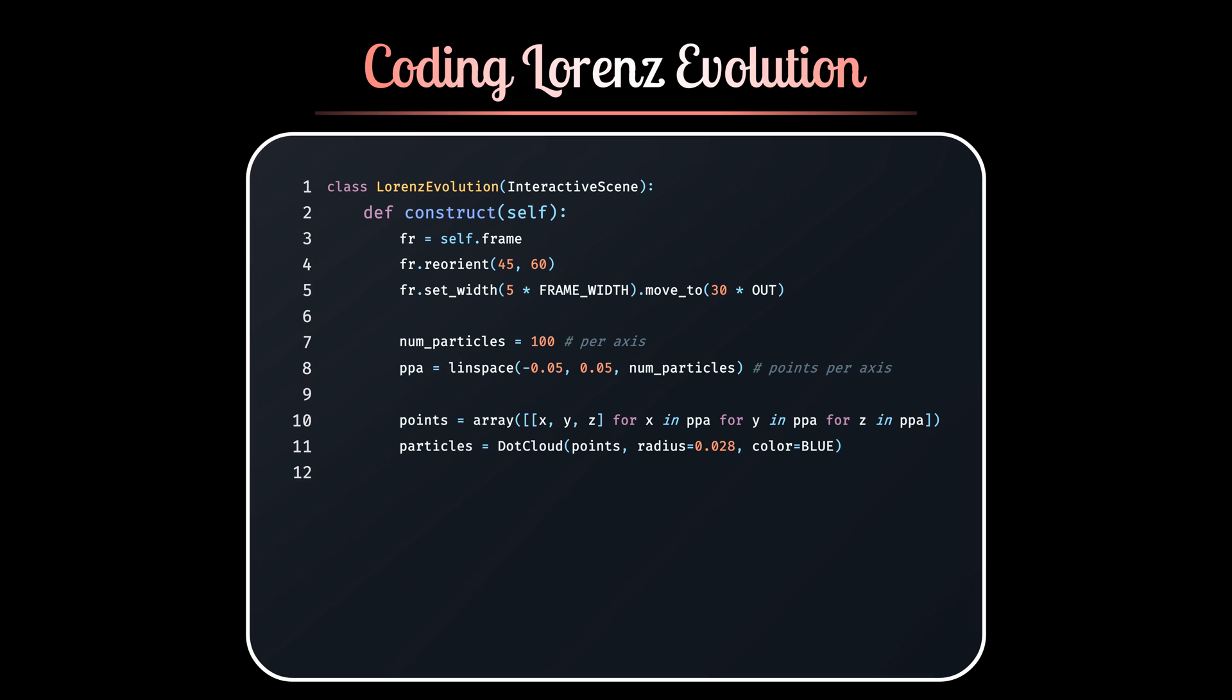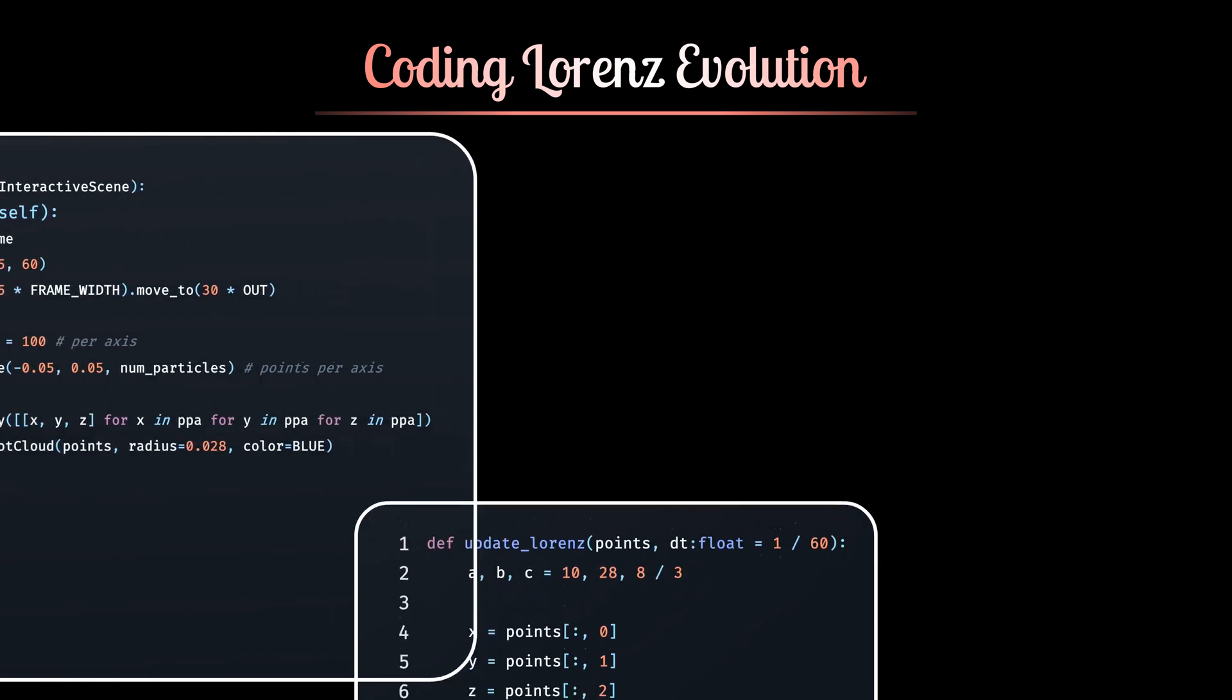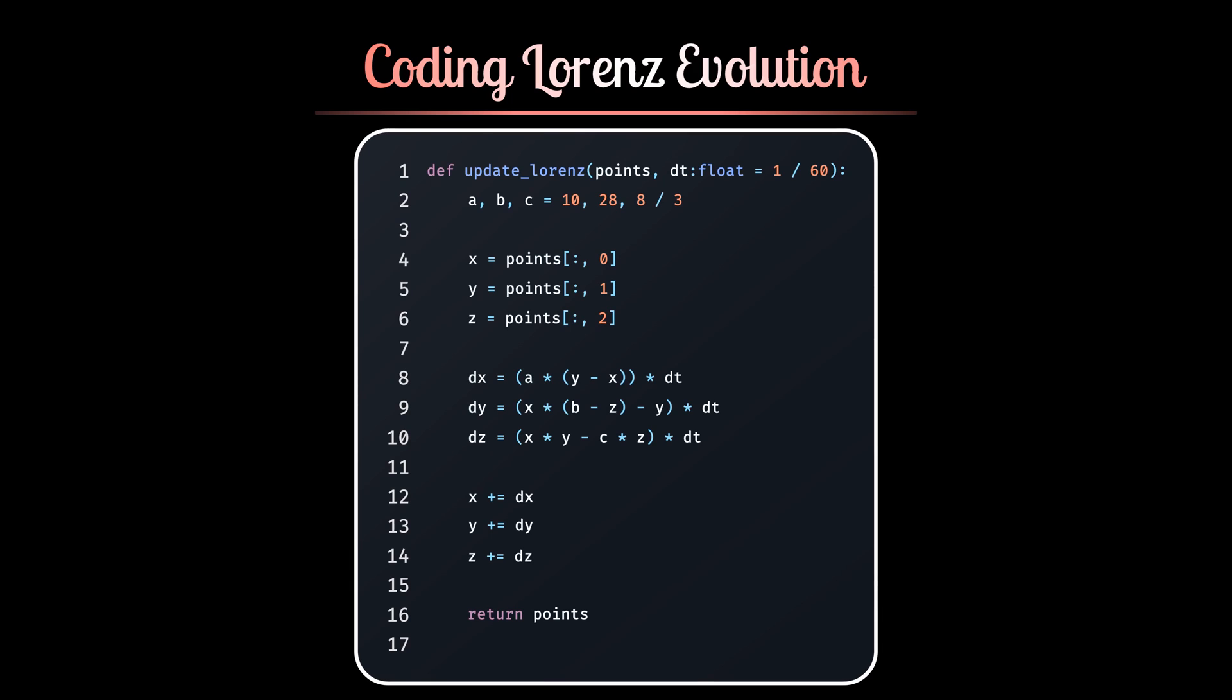Now, these particles need to update their position at every frame. The updateLorentz function ensures that every particle's positions update according to the differential equations of Lorentz Attractor. The x variable in this code extracts the x-coordinate of every particle. The index 0 implies that we are taking the 0 component of every row. The same logic applies to the y and the z variables. Finally, we are returning the matrix once it gets updated.